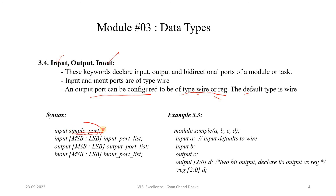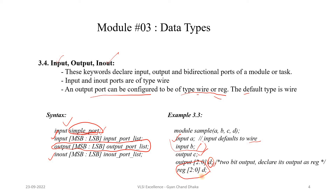In the syntax: an input port has data type wire; a vector input port is also wire; an output port can be wire or register. The default data type for an output is wire — to override it we declare it as reg. For example: input a, b (wire type); output c, d where d is a vector; and output reg e to explicitly declare an output as register type.